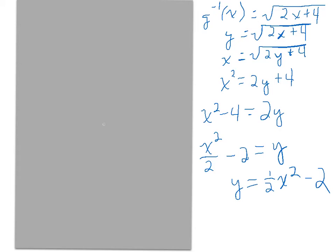Let's write it with the Y variable on the left-hand side: Y is equal to one-half X squared minus 2, which equals H of X. So the inverse of function G is H. So if I was calculating the inverse of H, wouldn't I get G? A function has an inverse, and the inverse of the inverse is the function.